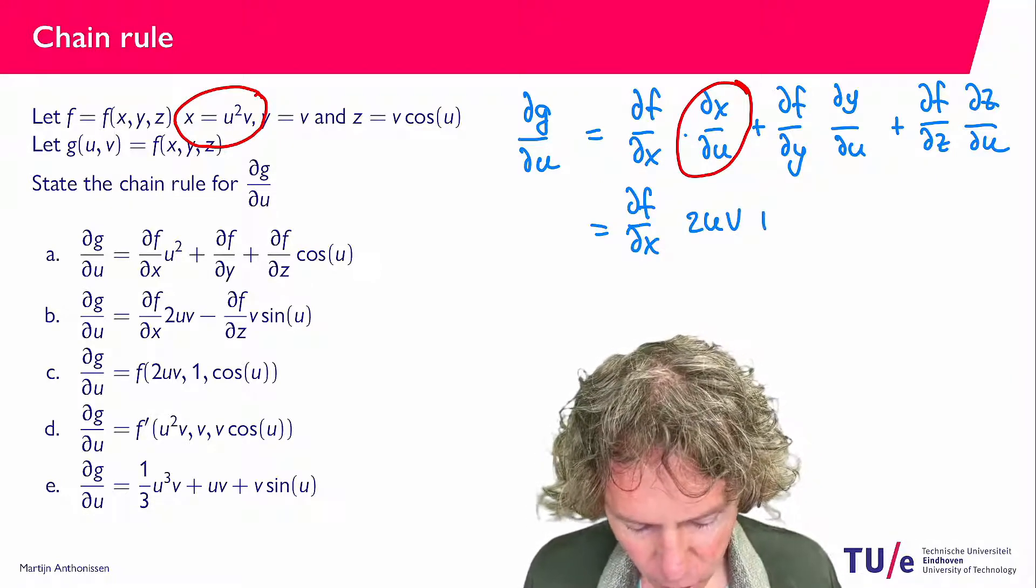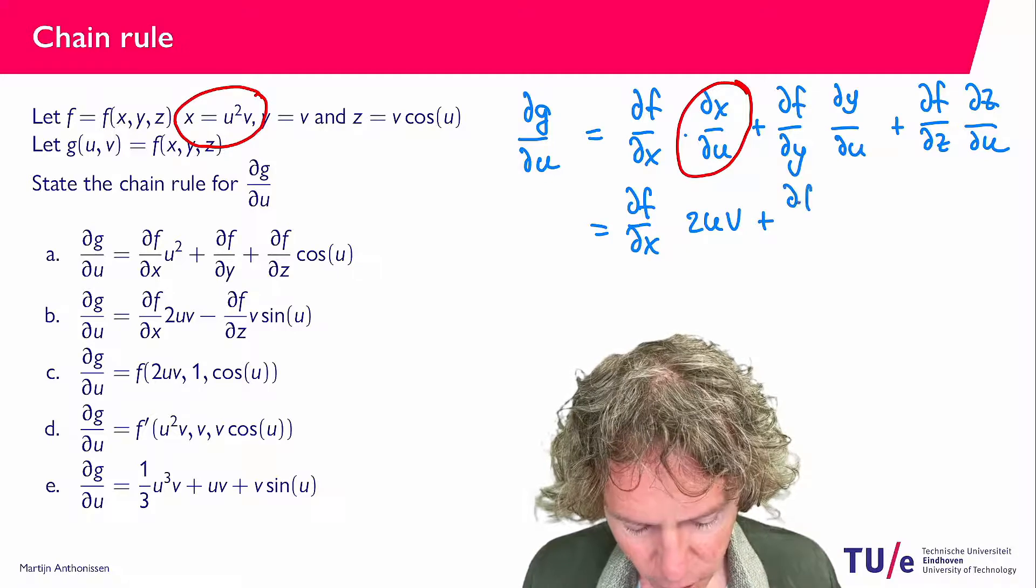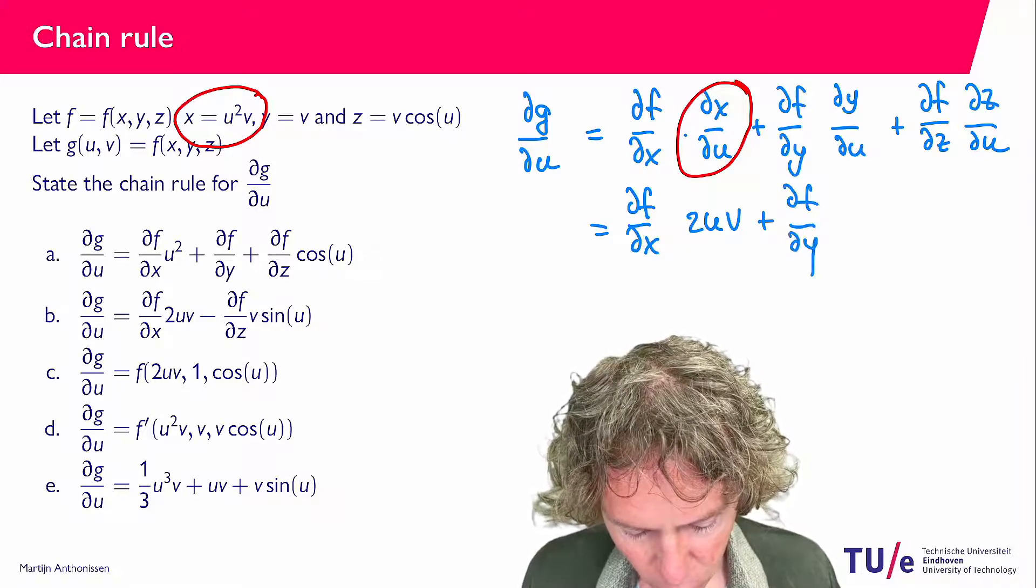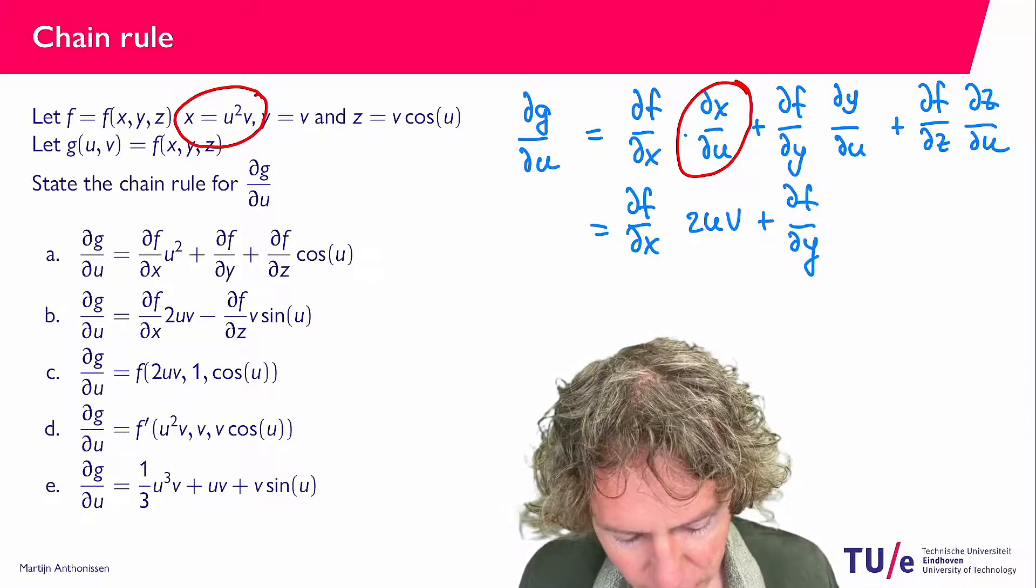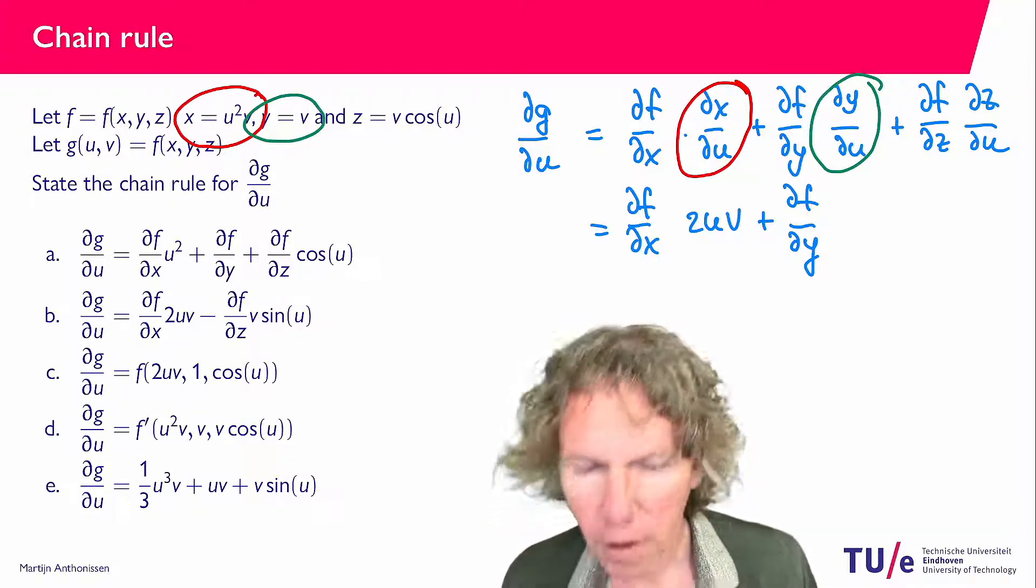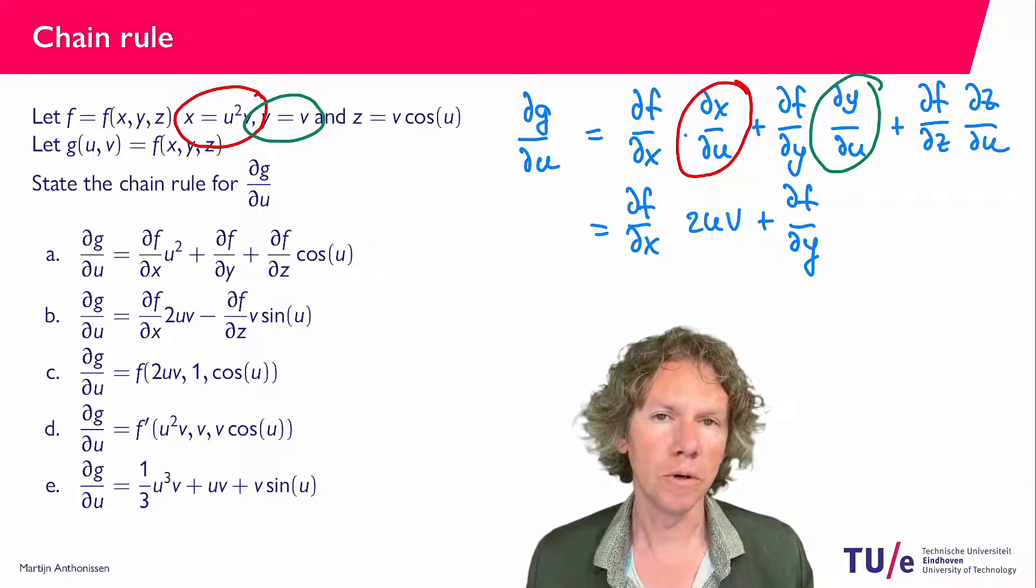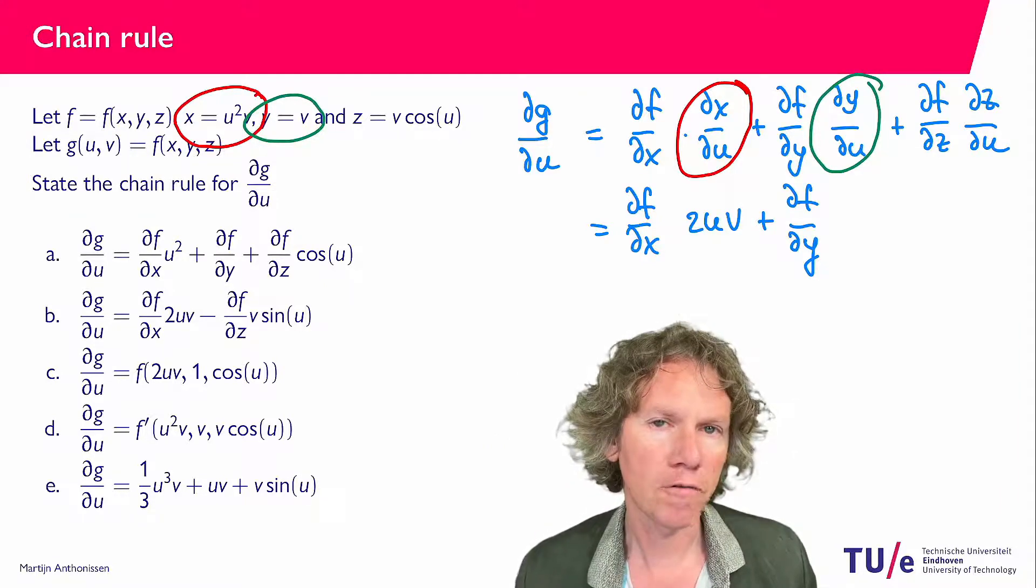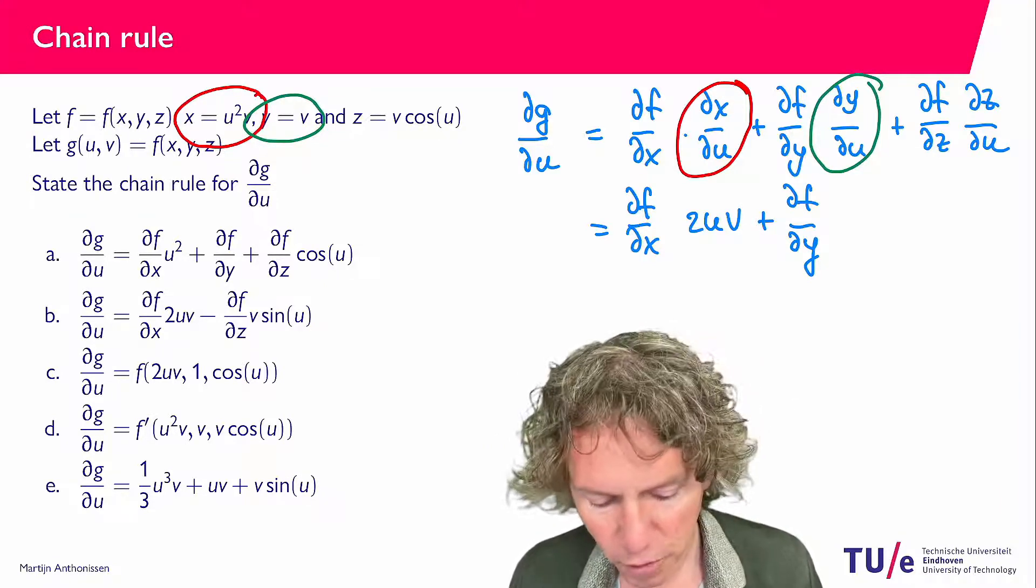Plus ∂f/∂y, and then to find ∂y/∂u, I need to differentiate v with respect to u. But v is a constant if we differentiate with respect to u, so this is going to give me 0.